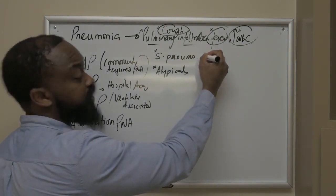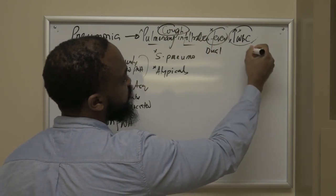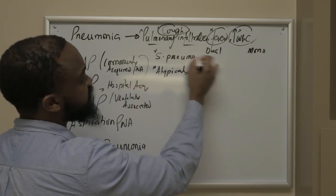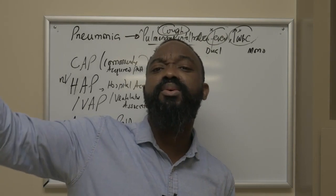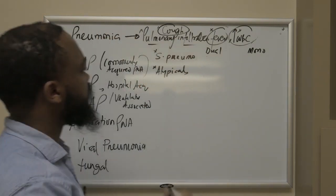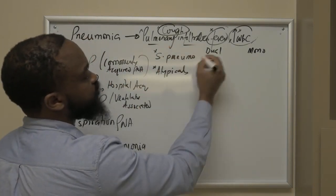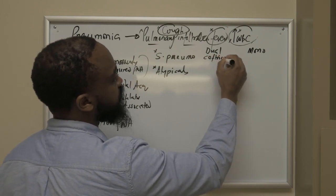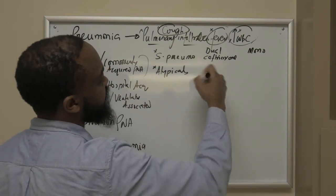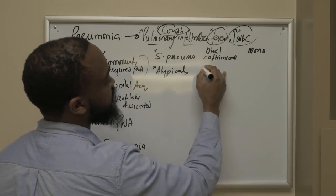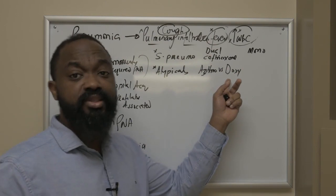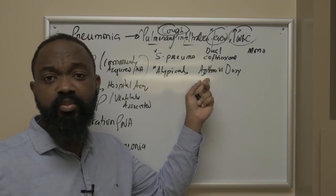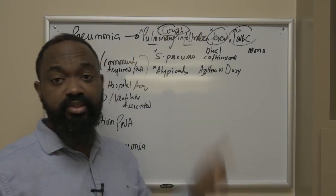There are two ways to approach antibiotic regimens for community-acquired pneumonia in hospitalized patients: dual therapy or monotherapy. For dual therapy — two medications — one covering Strep pneumo and one covering atypicals. Strep pneumo coverage would be ceftriaxone, and for the atypicals we have an option between azithromycin or doxycycline. Why choose doxycycline over azithromycin? Azithromycin has a risk of causing QT prolongation, so if the patient has QT prolongation, doxycycline would be the option.